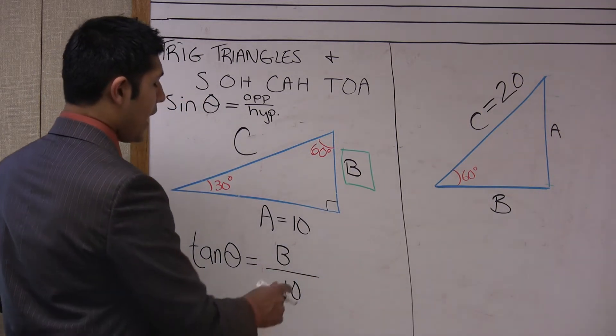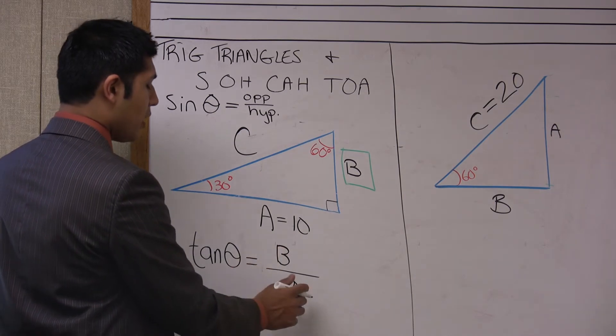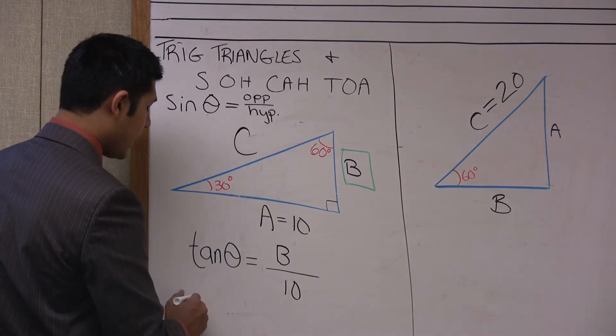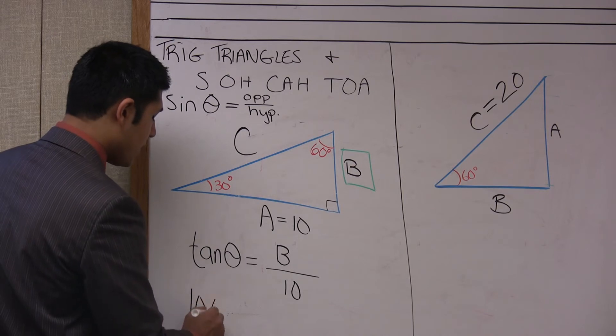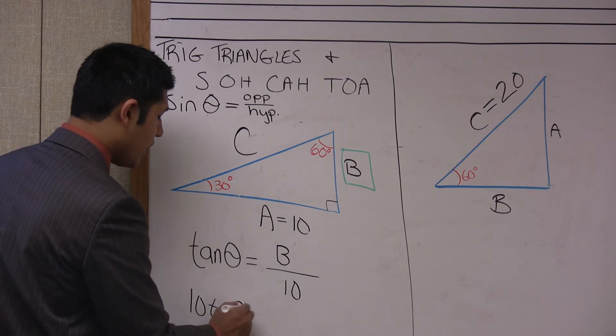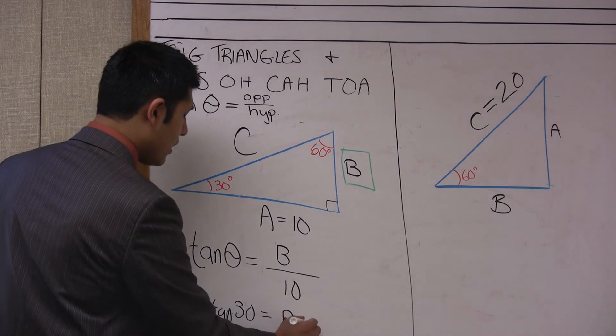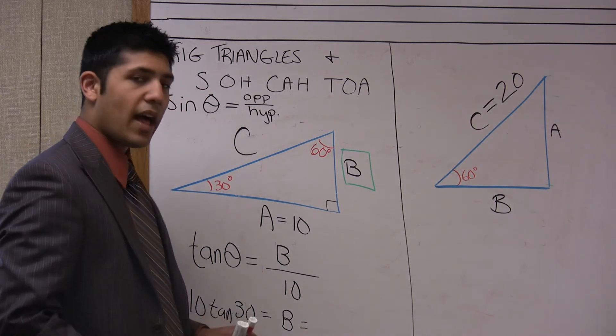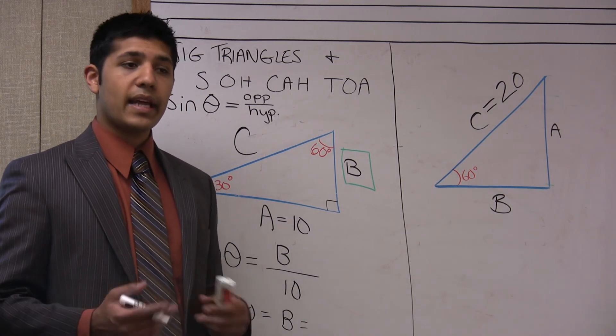Now simplifying for B, I can multiply both sides by 10 and I get 10 times the tangent of 30 is equal to B. By plugging this value into our calculator, we can get an answer.